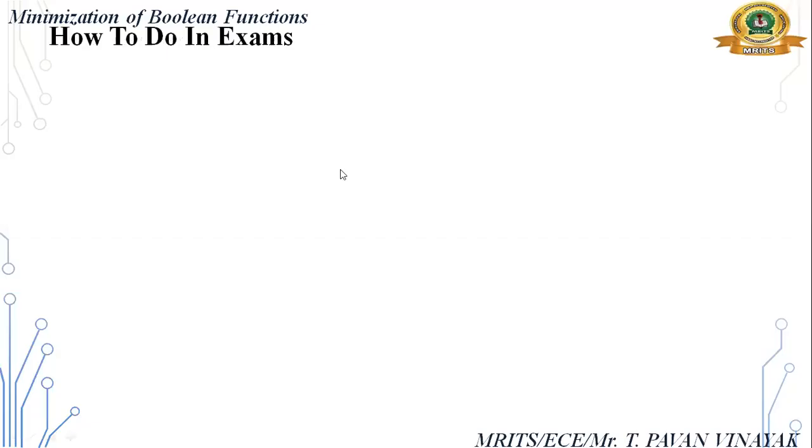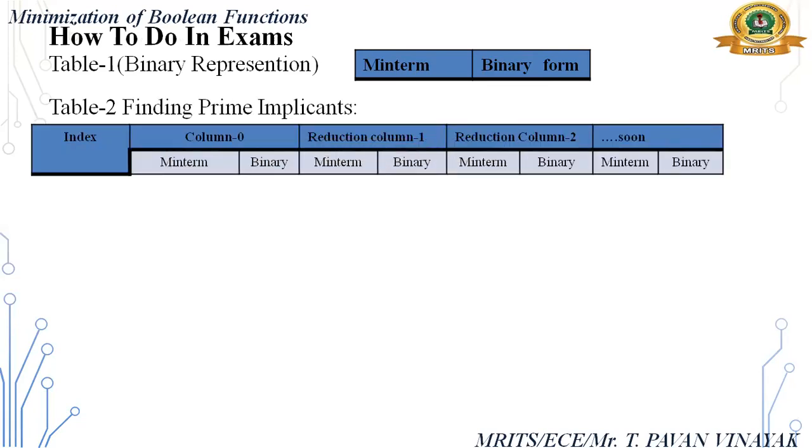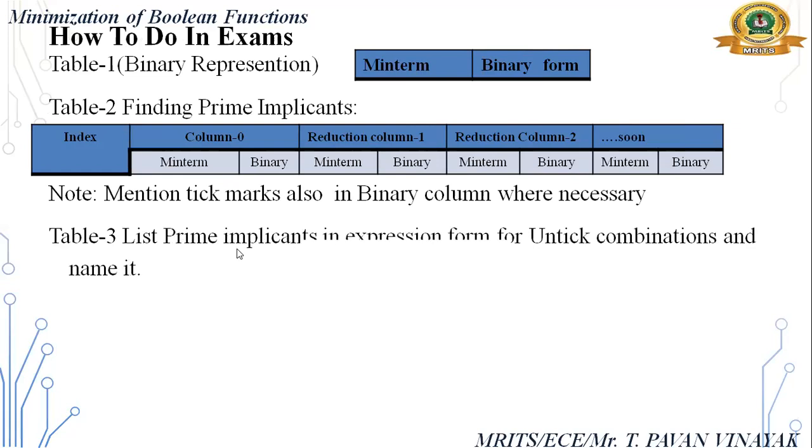How to do in exam: First create Table 1 for binary representation, then Table 2 for finding prime implicants. In the first column, write the same indexes in reduced column 1, then reduced column 2, and so on. Next is Table 3.